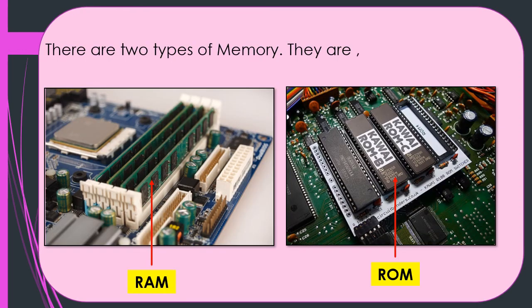Here you can see the two types of primary memory: RAM and ROM. The two pictures show you a real RAM and a ROM chip.